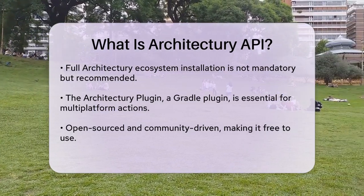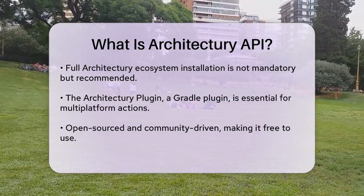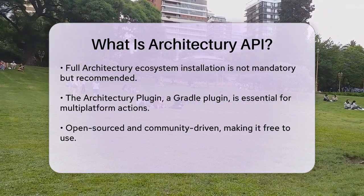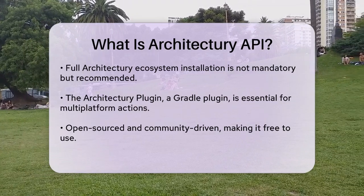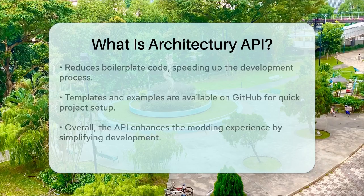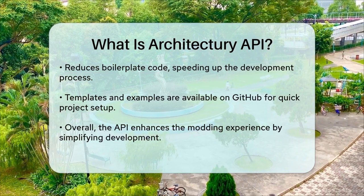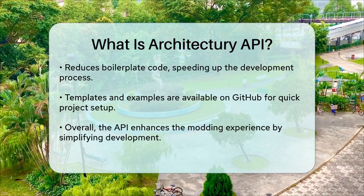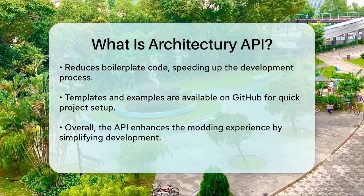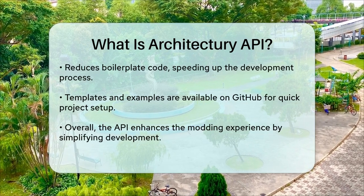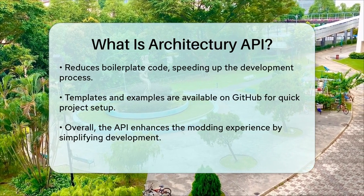The advantages of using the Architecture API are clear. It's open-sourced, which means it's free and community-driven, and it reduces the amount of boilerplate code you need to write for your multi-platform mods. This makes your development process faster and more efficient. To get started, you'll need either Minecraft Forge or Fabric API, or even NeoForge in some cases. There are also templates and examples available on GitHub to help you set up your project quickly.